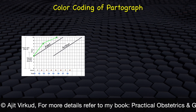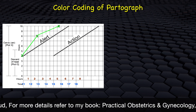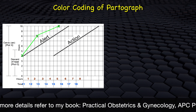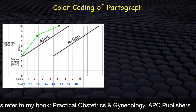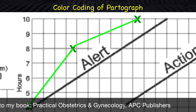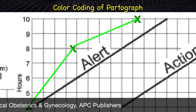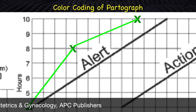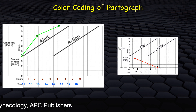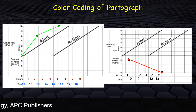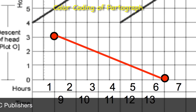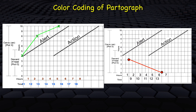To make the partograph visually appealing and easily decipherable, we use color coding for plotting the readings. Plot the X of dilatation using a green color pen; as more readings are taken, the X points are joined with a straight green line. Plot the O of descent of head using a red color pen; as more readings are taken, the O points are joined with a straight red line. All other parameters are recorded using a black pen.